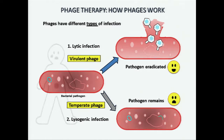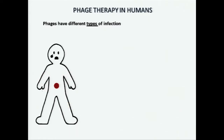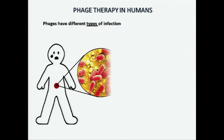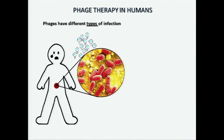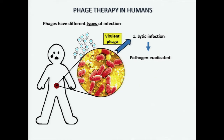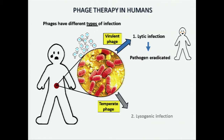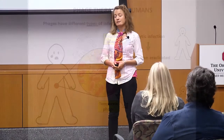What does this mean for us? Meet John. John has a bacterial infection caused by a superbug we cannot treat with antibiotics, so let's treat it with phages. If those phages are virulent, they will undergo a lytic infection and eradicate the pathogen — John will be cured. However, if the phages are temperate, they will undergo a lysogenic infection, the pathogen will remain, and John will still be sick.